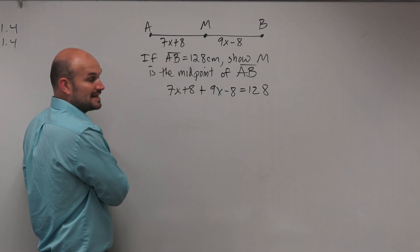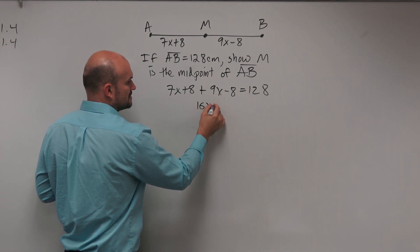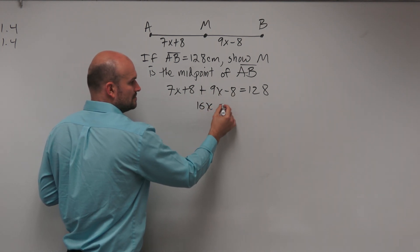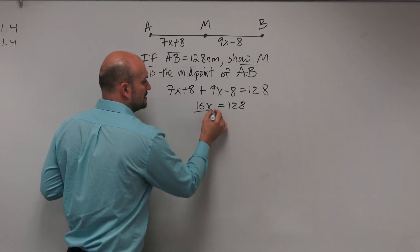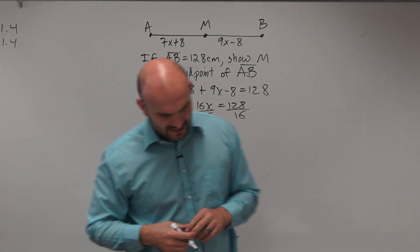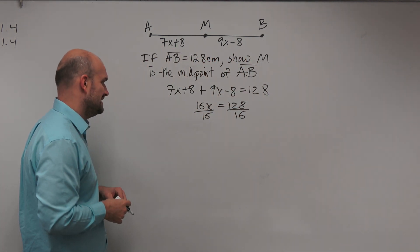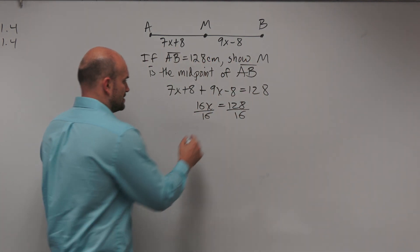Now let's find x. Combining like terms: 7x plus 9x is 16x, and 8 minus 8 is 0, so 16x equals 128. Dividing by 16, we get x equals 8.